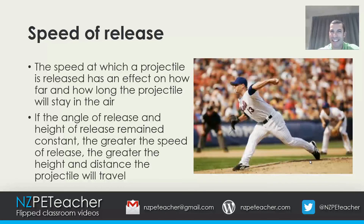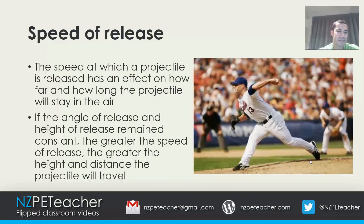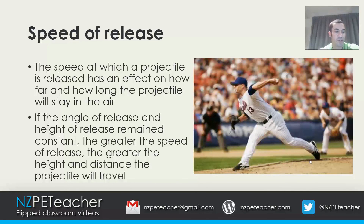Not all sports need distance — in some, accuracy is more important. In those sports the speed of release decreases and more emphasis is placed on perfecting the angle and the height. For example, basketball players attempting a free throw would slow down their throwing action, placing all their focus on technique to improve accuracy. If the same player had to beat the shot clock from well before the three-point line, their throwing action would speed up as their need for maximum force outweighs their need for precision.